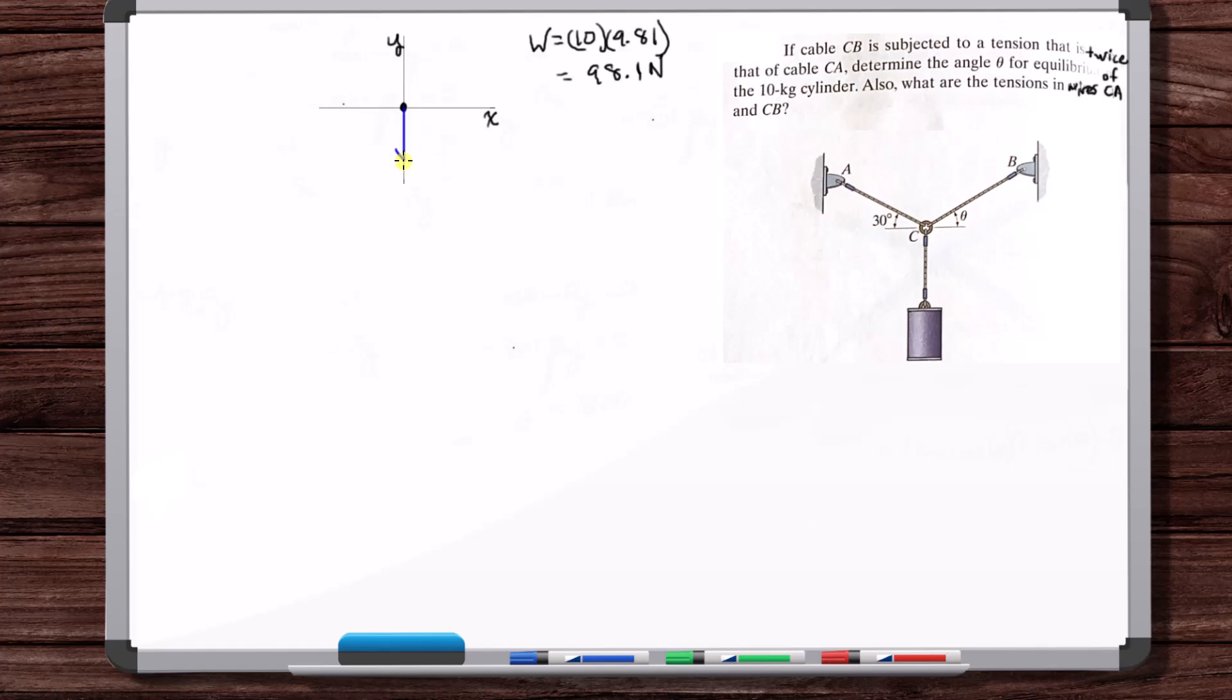Okay, so what forces do we have on this ring? We've got a downward force at 98.1 newtons. We've got the force on cable or wire CB and we know its orientation. It's oriented at theta. Well, we don't know theta. We're trying to determine theta. So we don't know its orientation actually.